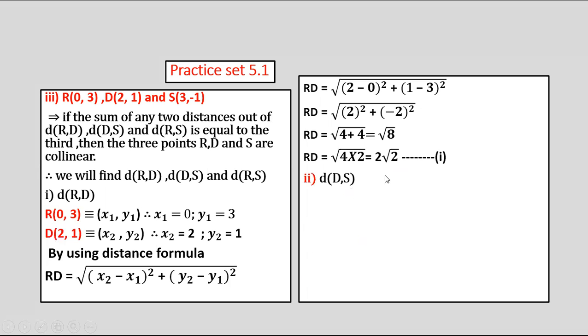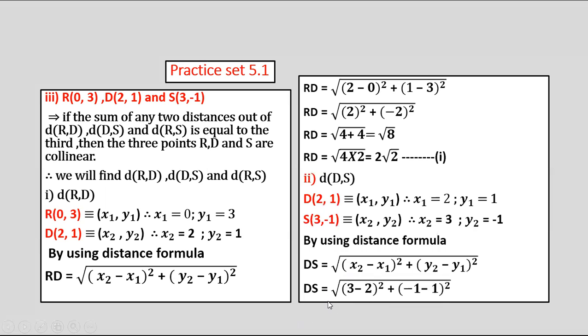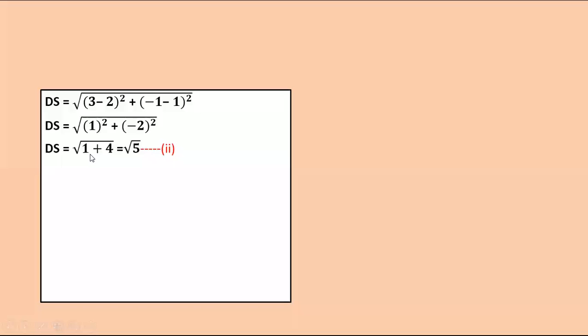Similarly, to find distance DS: D(2, 1) as x1, y1 and S(3, −1) as x2, y2. By distance formula, DS = √[(3−2)² + (−1−1)²] = √[1 + (−2)²] = √[1 + 4] = √5, equation number 2.